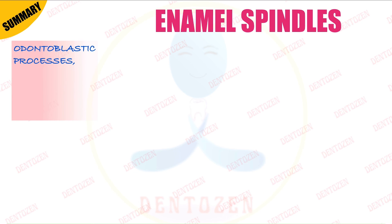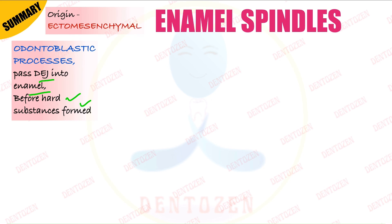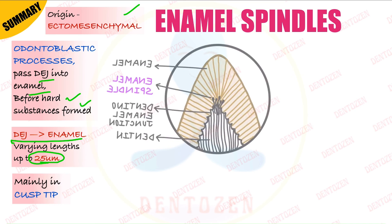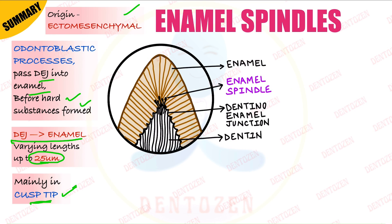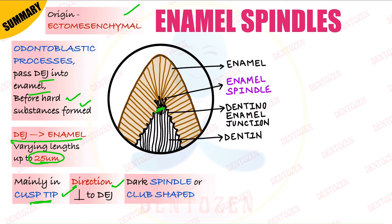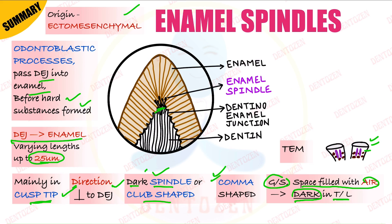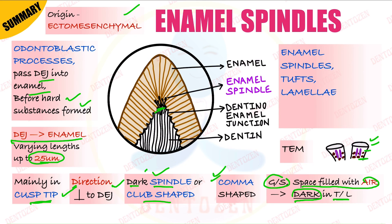Summary of enamel spindles: they are odontoblastic processes that have crossed the dentino-enamel junction into enamel before hard substances are formed. Their origin is ecto-mesenchymal. Length is about 25 microns; they mainly lie in the cusp tip region. Direction is perpendicular to the dentino-enamel junction. They appear as dark spindle-shaped, club-shaped, or comma-shaped structures. Air fills the space in ground section, appearing dark in transmitted light. Under transmission electron microscopy they appear as channels containing needle-like crystals or amorphous/granular substance. Along with tufts and lamellae, they are hypo-mineralized structures of enamel.